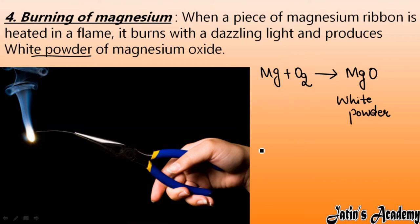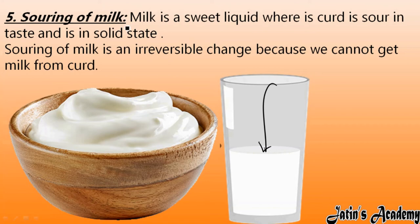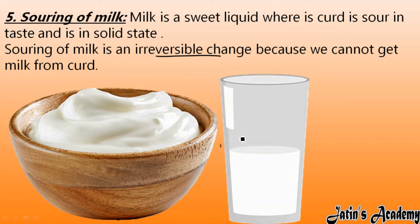Next we are having souring of milk. When milk is heated and some curd is added into it, after one day — overnight — it will convert into curd. This process in which milk converts into curd is souring of milk. The entire properties of milk change: milk is a sweet liquid, but the curd formed after a few hours has a sour taste, is in solid state, and is different from liquid milk. Souring of milk is also an irreversible change — we cannot convert curd back into milk — so souring of milk is a chemical change.